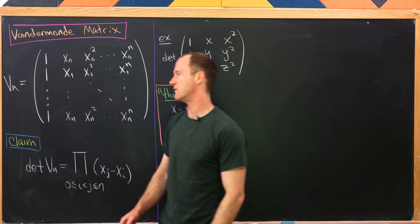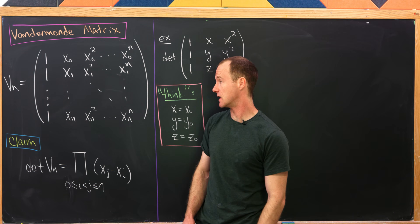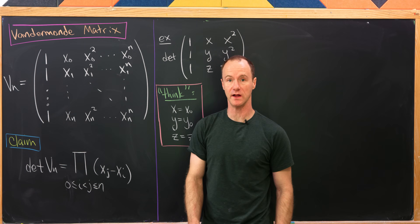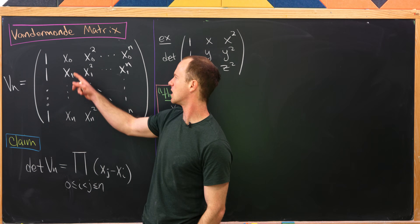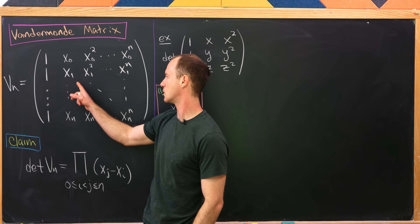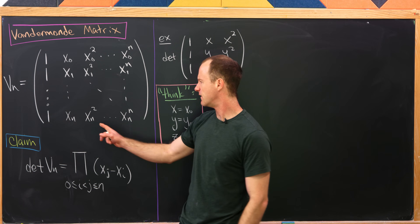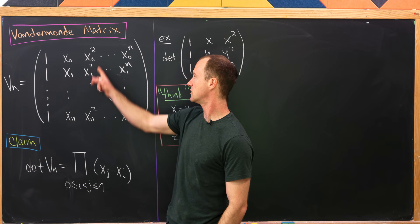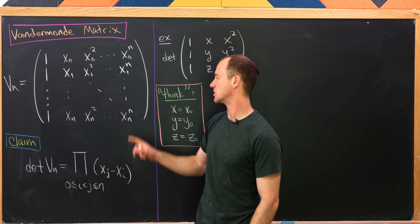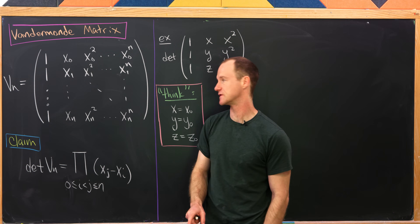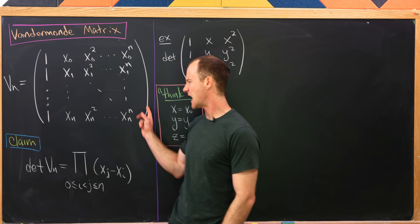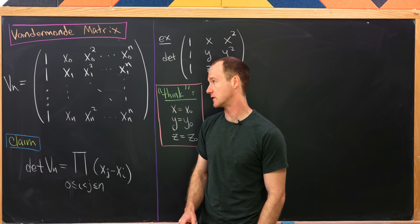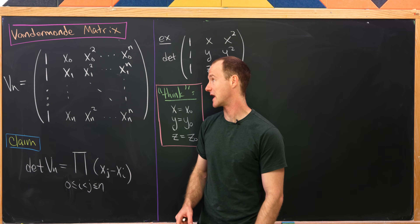I'll call the nth Vandermonde matrix V sub n, and it's the matrix that starts with a column of ones, then a column given by x0, x1, x2 down to xn, then a column of the squares of all of those, then the cubes, all the way up to the column of the nth powers. Notice that the first column is the zeroth power of all of those, so it fits this format as well.